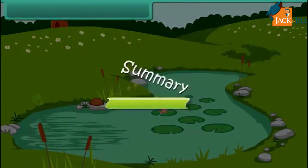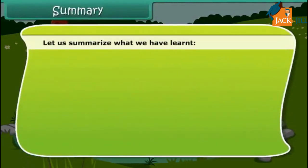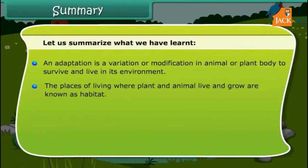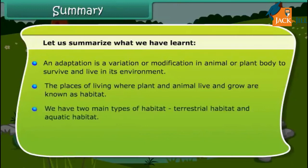Let us summarize what we have learned. An adaptation is a variation or modification in an animal or plant body to survive and live in its environment. The places of living where plants and animals live and grow are known as habitat. We have two main types of habitat: terrestrial habitat and aquatic habitat.